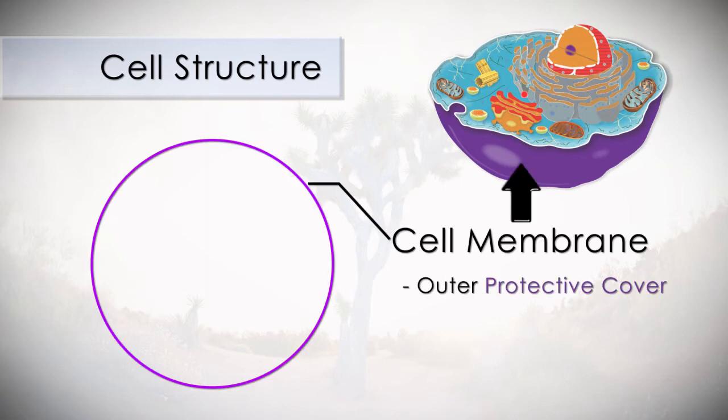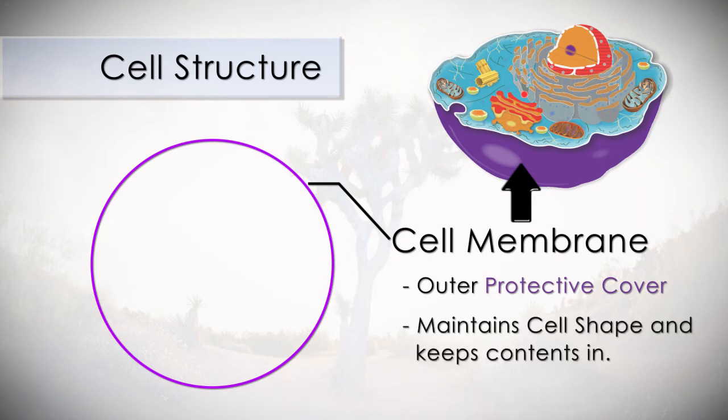The cell membrane is a semi-permeable covering. Semi-permeable means that the membrane allows certain substances to enter the cell and to leave the cell, and for the most part, it keeps out harmful substances. The membrane maintains the cell's shape and it keeps the contents, or the organelles, from spilling out.